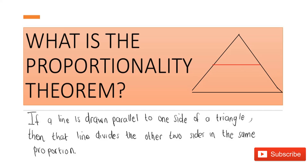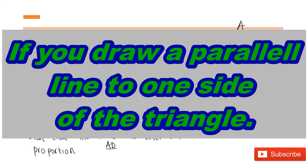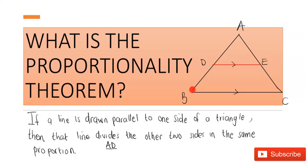What does this mean in terms of the sides? If this is triangle ABC and the parallel line drawn is called DE, then the proportionality theorem states that AD over DB is equal to AE over EC. So drawing a parallel line DE to side BC divides the two sides into the same proportion: AD/DB = AE/EC.